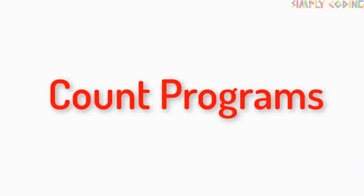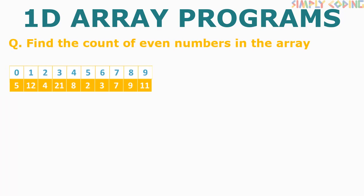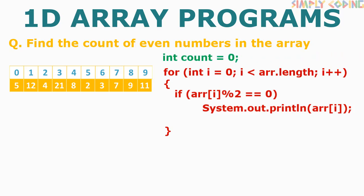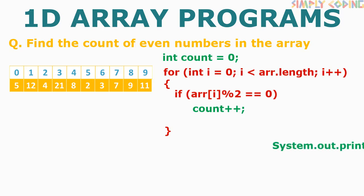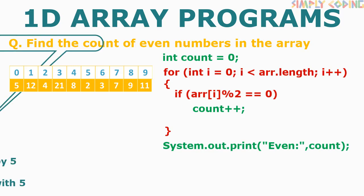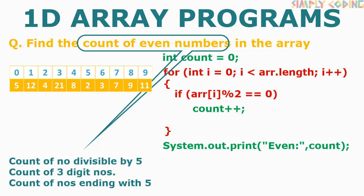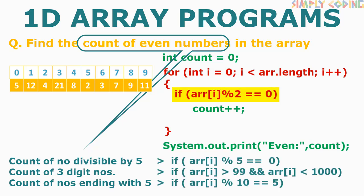Count programs are equally easy — like count the number of even numbers in an array. Take the print program, initialize a count variable to 0 before the loop. Inside the loop, replace the print statement with incrementing count by 1. Outside the loop, print count. Variations include counting numbers divisible by 5, three-digit numbers, or numbers ending with 5 — just change the if condition.